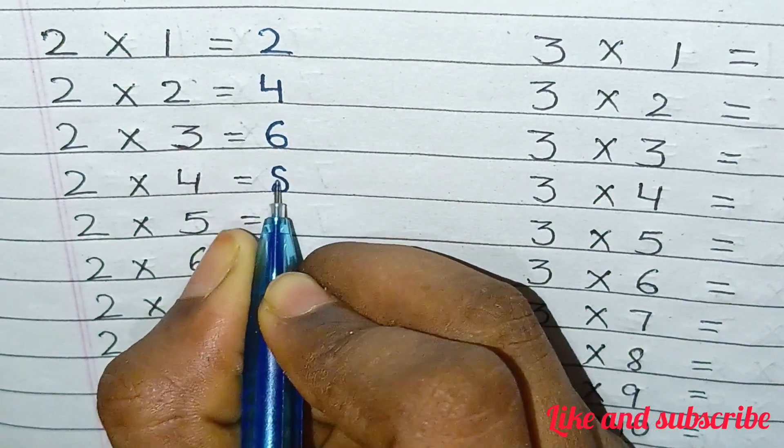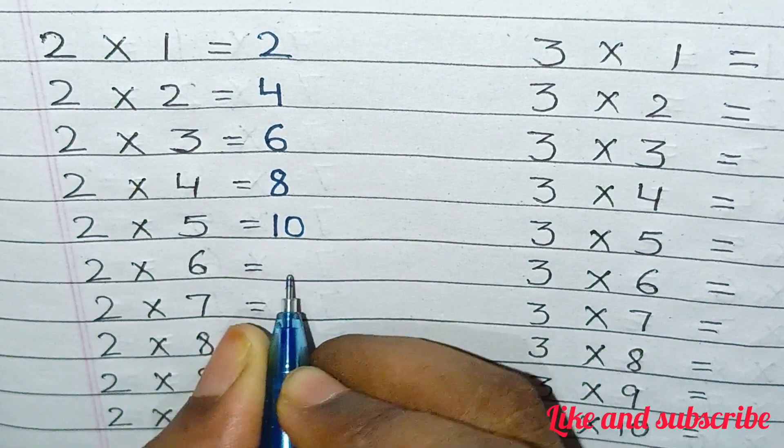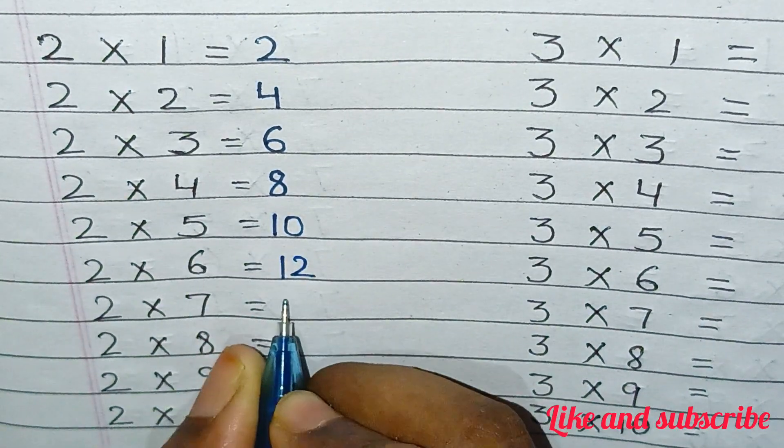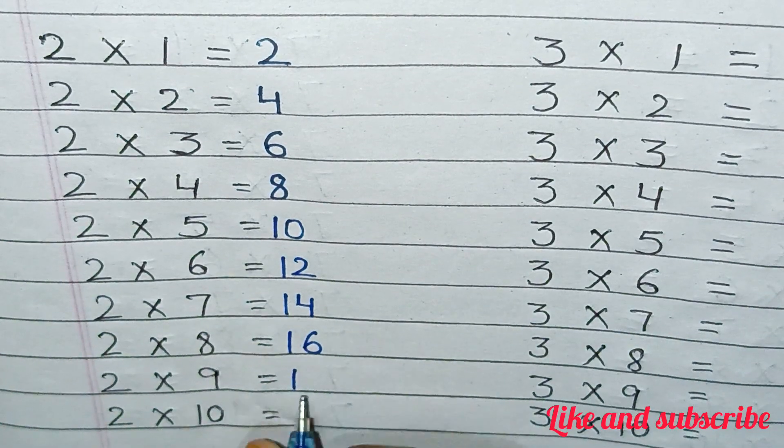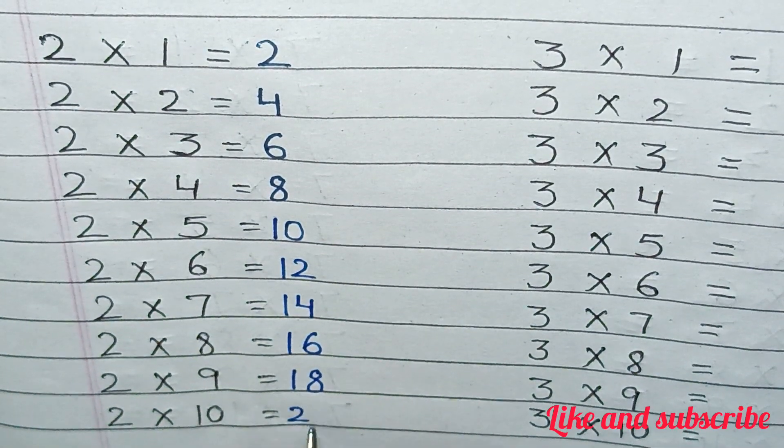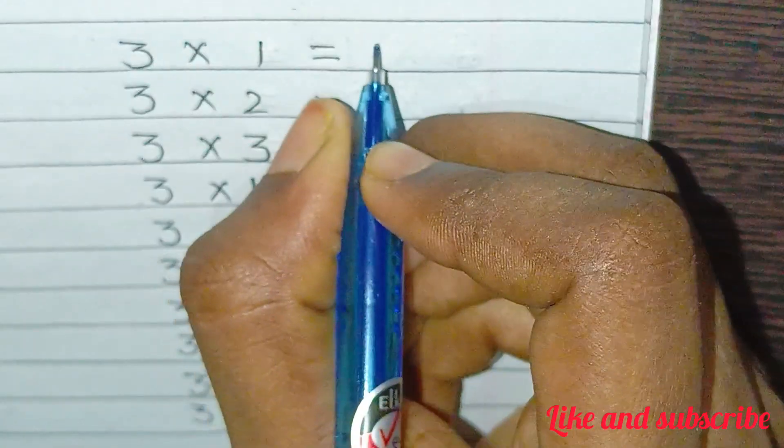2×1=2, 2×2=4, 2×3=6, 2×4=8, 2×5=10, 2×6=12, 2×7=14, 2×8=16, 2×9=18, 2×10=20.